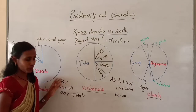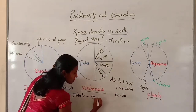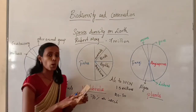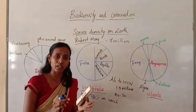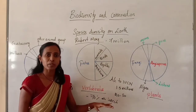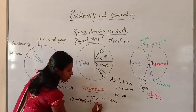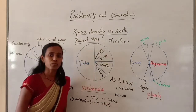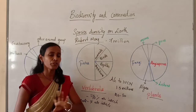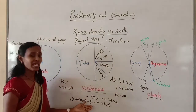Another interesting fact is that out of all animals, 70% are insects. So out of every 10 animals, 7 are insects. The number of insects is the highest worldwide among all animal groups.